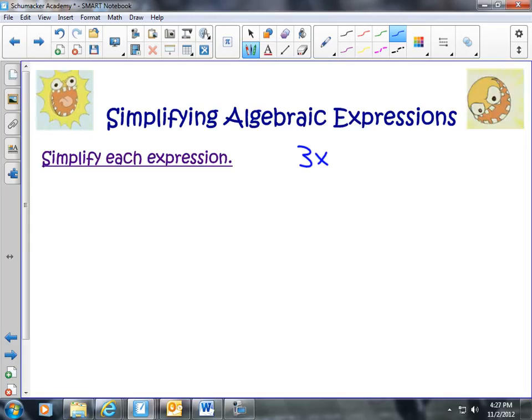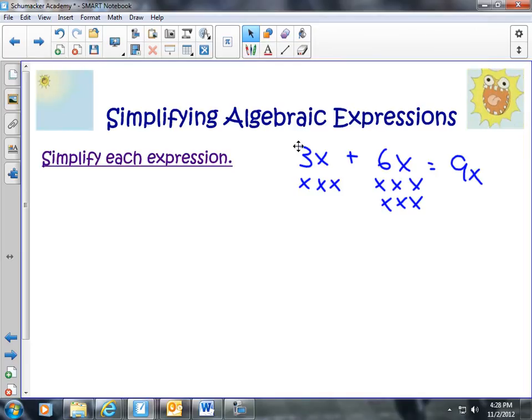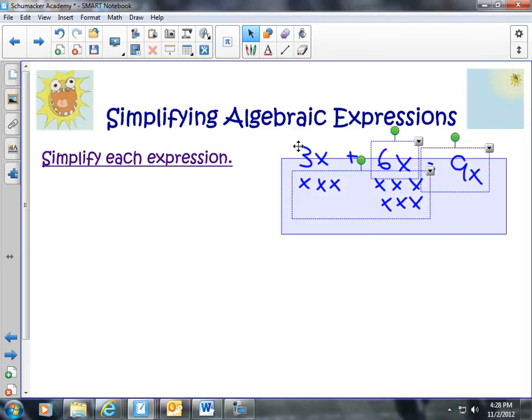Like terms are terms that either have, they're both numbers, like they're both numeric terms, like 5 and 3 are like terms. They can be added together. If they have the same variable, like 3x and 6x, they both have an x as their variable. Therefore, they are like terms. Therefore, you can add them together.